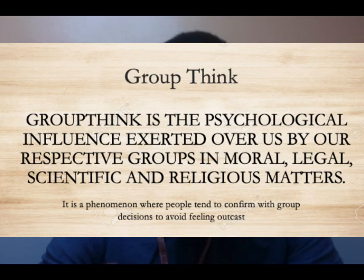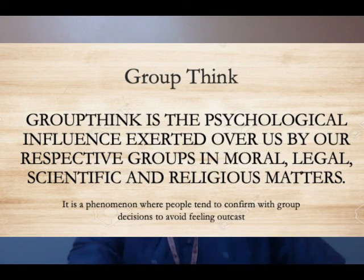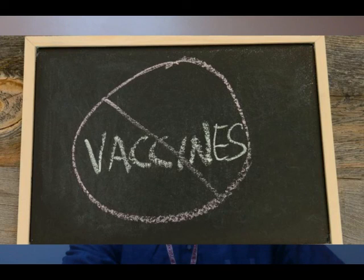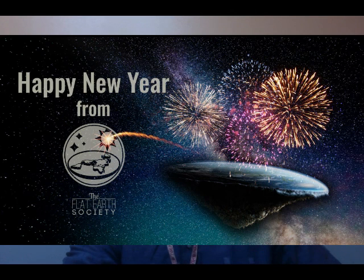The last term is 'groupthink.' Groupthink is the psychological influence exerted over us by our respective groups in moral, legal, scientific, and religious matters. It is a phenomenon where people tend to conform with group decisions to avoid feeling outcast. Certain groups even have scientific influence over their members — for example, the anti-vaccination group or the Flat Earth Society, which have convinced members that the earth is flat and that vaccines are harmful, even without scientific evidence.